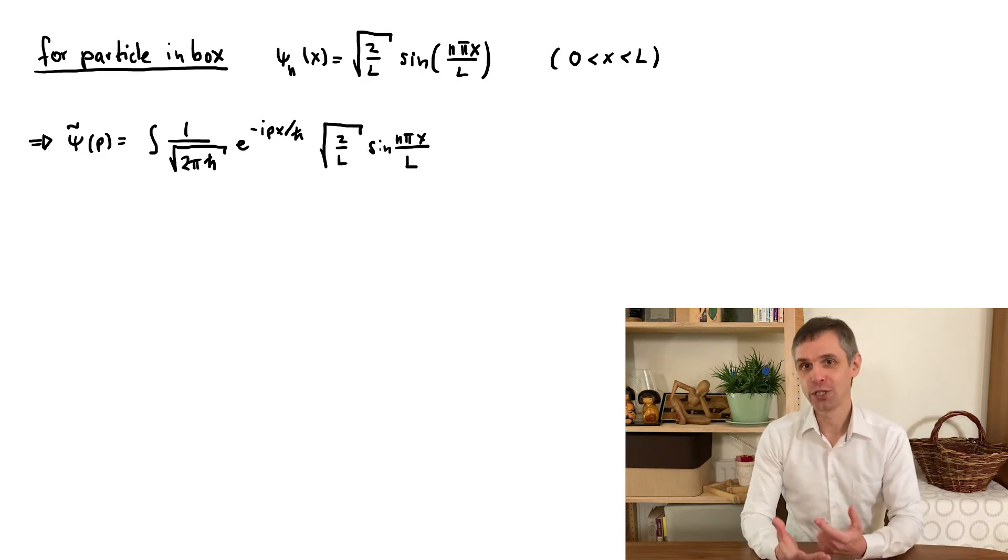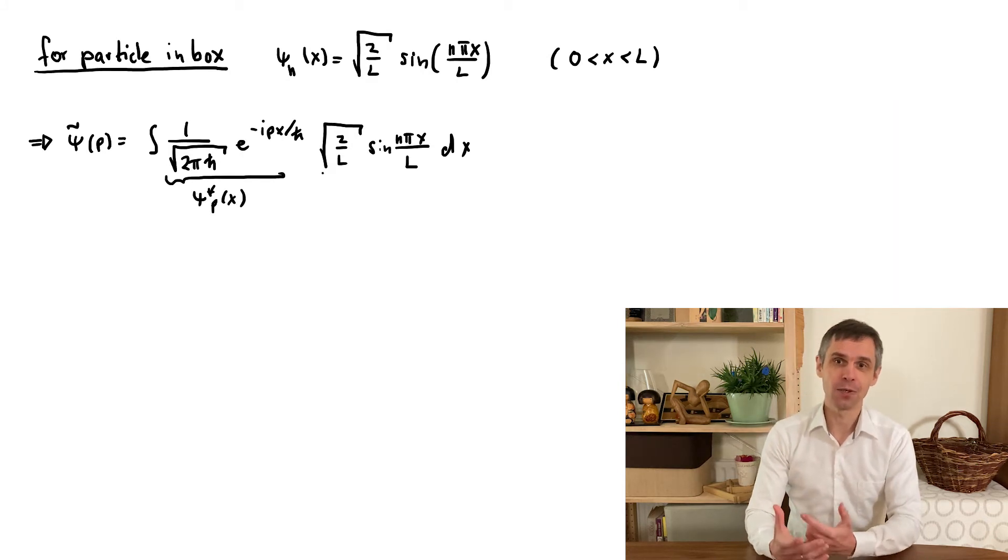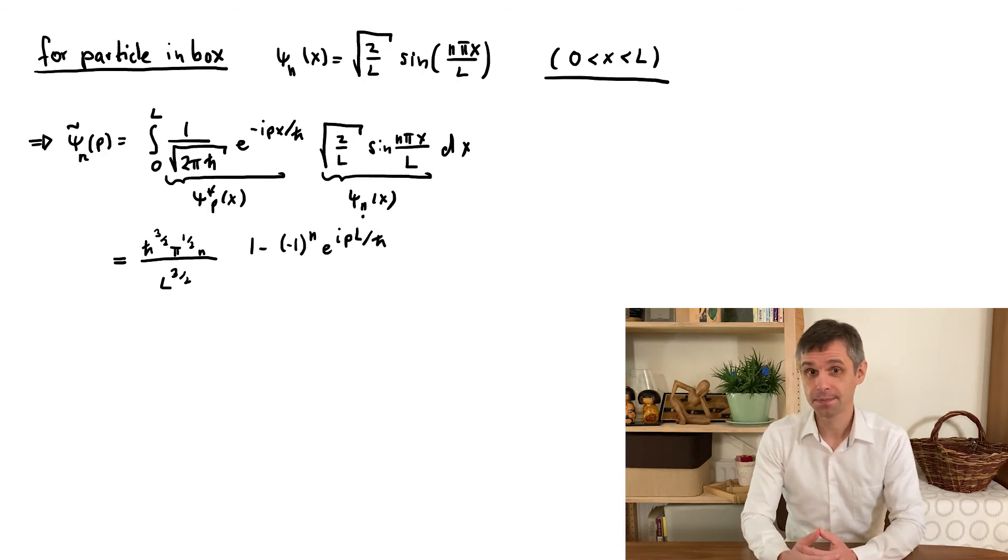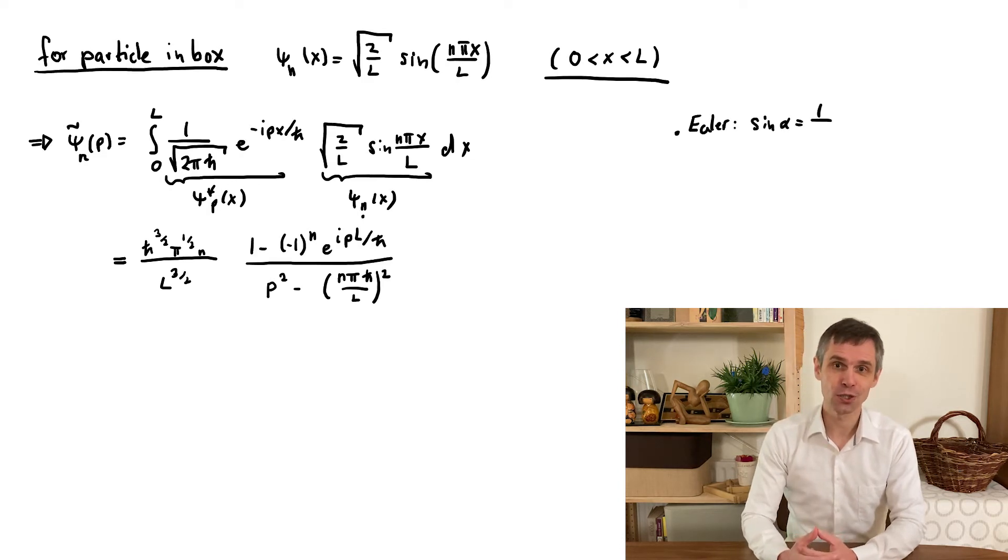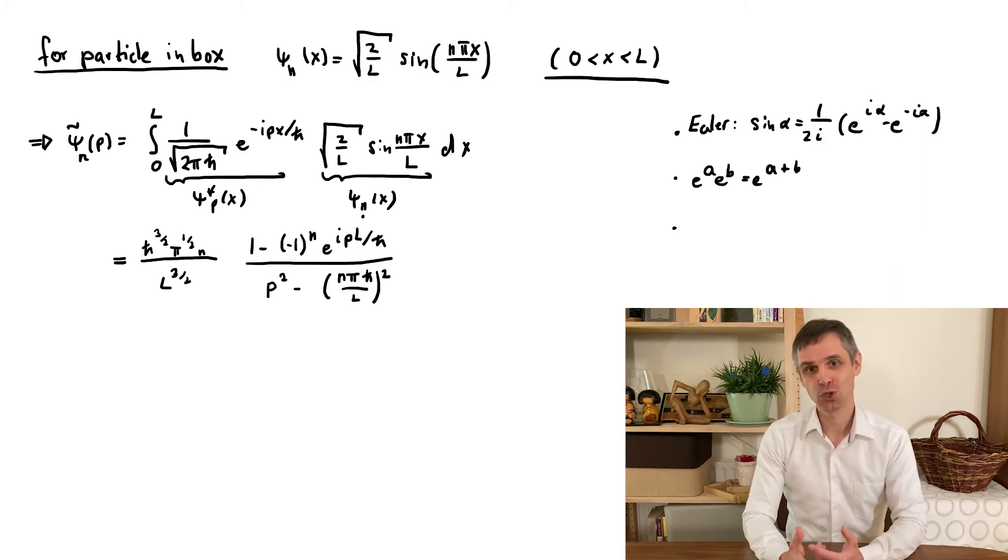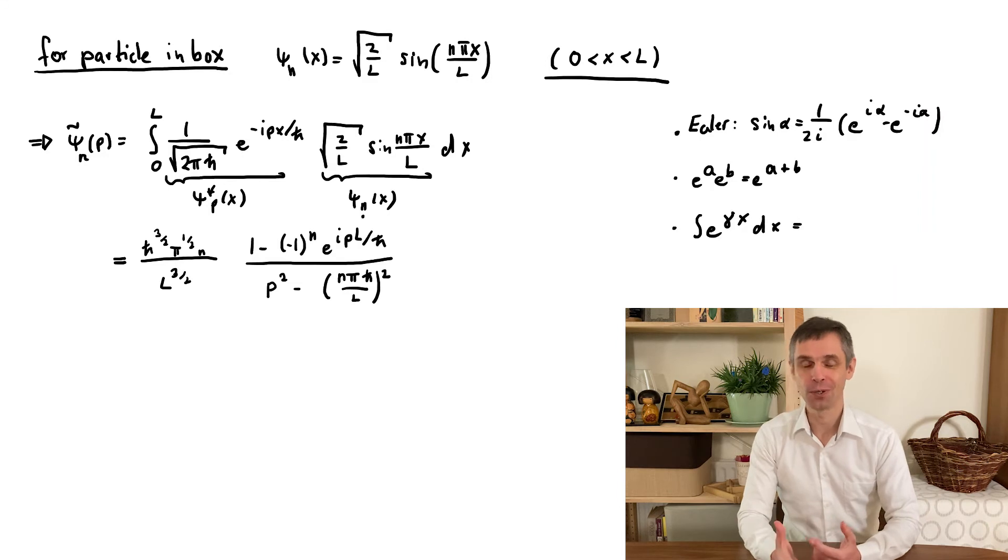So multiply the state by the complex conjugate of the momentum eigenstate—this complex conjugation really just puts a minus sign into the exponent—and then we integrate over all space, but again the integrand is only finite between the walls. This integral can be done exactly. For instance, you can apply Euler's identity to write the sine in terms of exponentials, combine products of exponentials by the standard rule, and then integrate. The expressions given here all apply also for complex numbers.